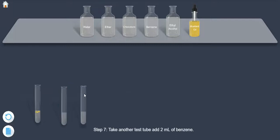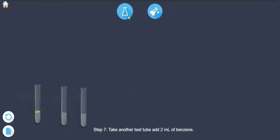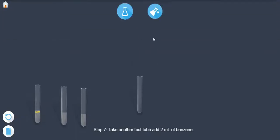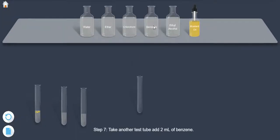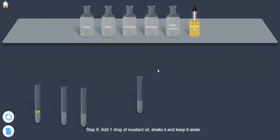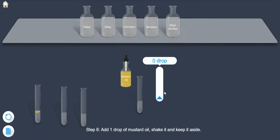Step 7. Take another test tube, add 2 ml of benzene. Step 8. Add 1 drop of mustard oil, shake it and keep it aside.